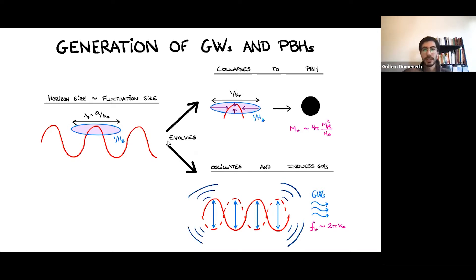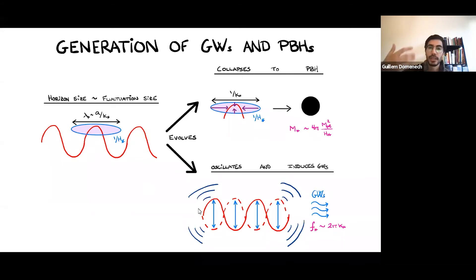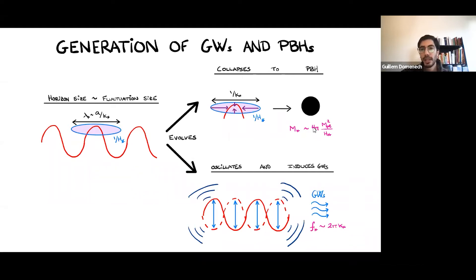On average, the density fluctuations create waves in the fluid — they start to oscillate. These oscillations create spacetime oscillations, i.e., gravitational waves, with a typical peak frequency proportional to the typical scale of the fluctuation. By this simple estimate, you can relate the gravitational wave frequency to the mass of the primordial black holes.